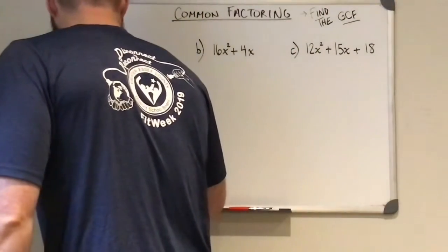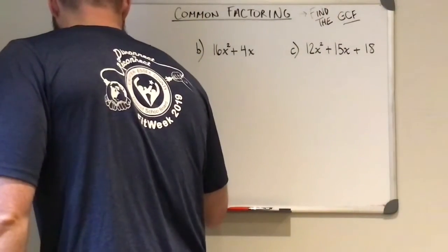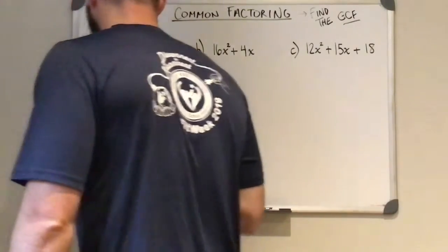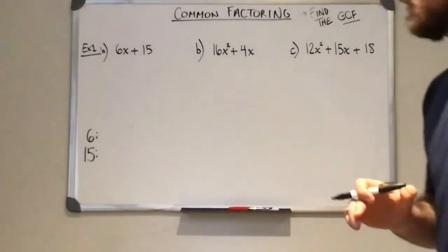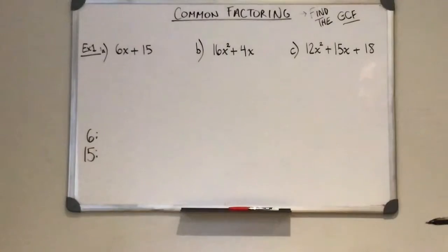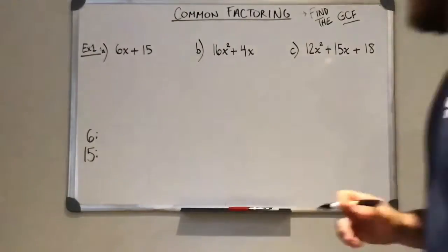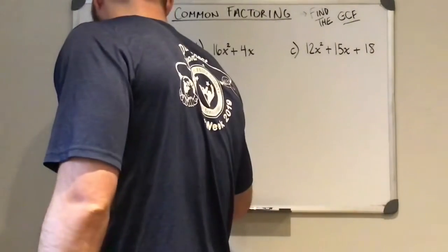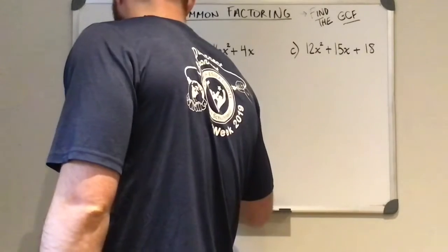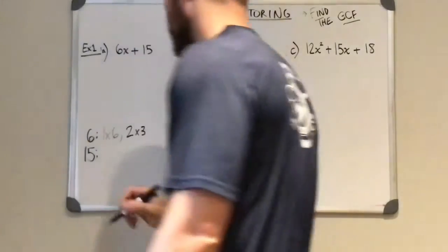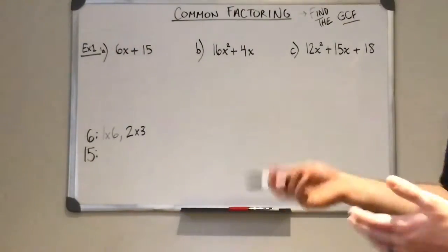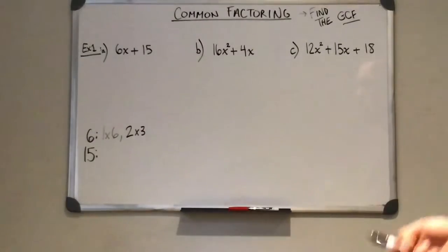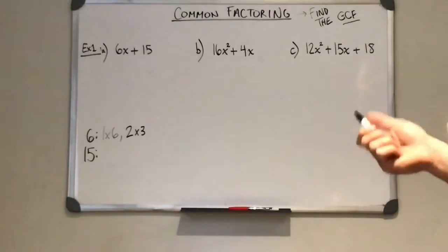Okay, so if we look at 6 and 15, I'm going to list out all the possible ways we can multiply whole numbers to get 6. So 6, we can have 1 times 6, and we can also have 2 times 3.